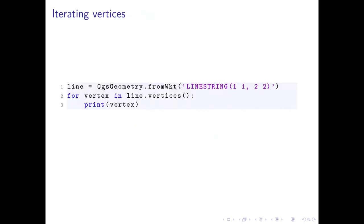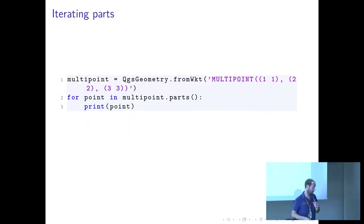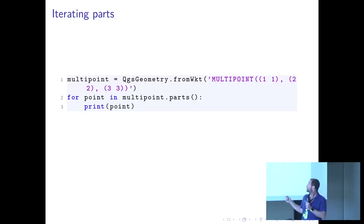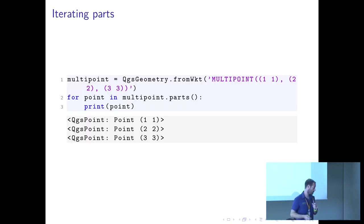When working with geometries, we can create a geometry the same way we always did, for vertex and line inverses, and then get all the points by simply iterating through geometries. Same thing for multipoint — iterating through multipolygon parts. Pretty easy.